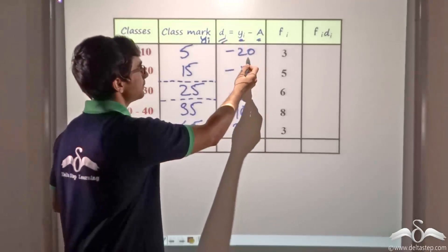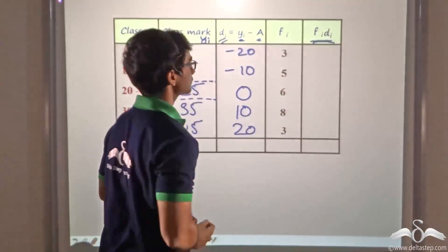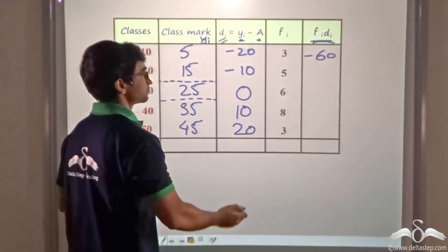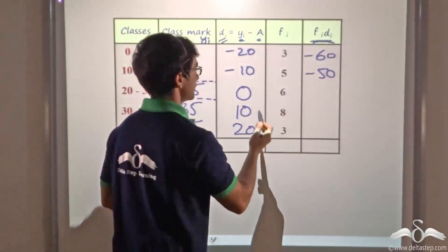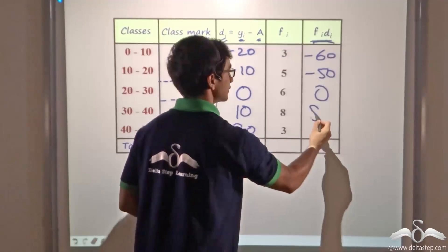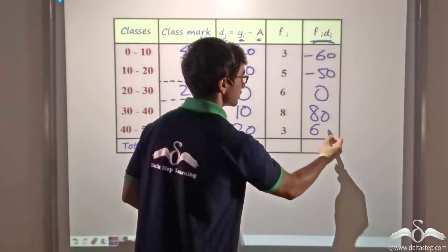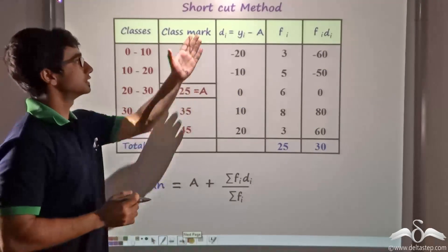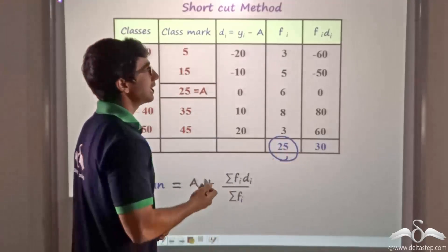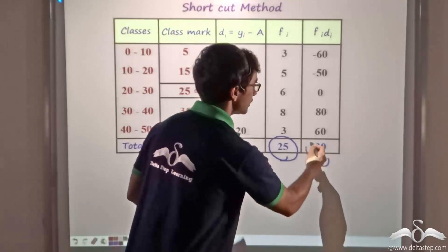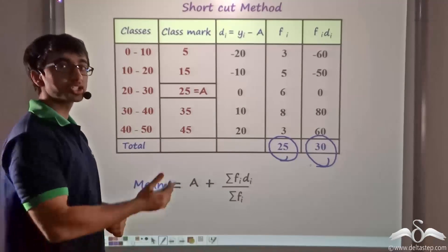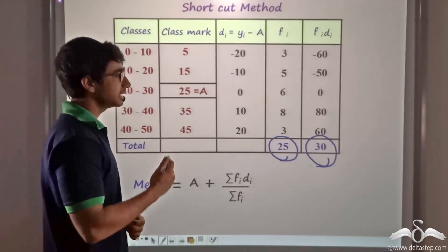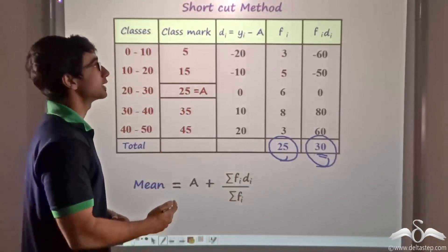Now I multiply Di with Fi to get the column FiDi. The multiplication is quite simple: minus twenty into three is minus sixty; minus ten into five is minus fifty; zero into six is zero; ten into eight is eighty; twenty into three is sixty. Adding the Fi column gives twenty-five, and adding the FiDi column gives thirty. Compared to the previous case where we dealt with 655, here we are dealing with only 30. This method is known as the shortcut method.